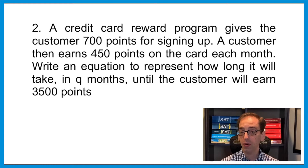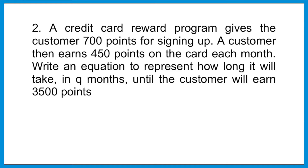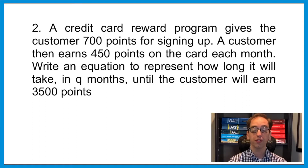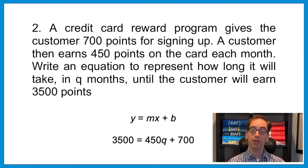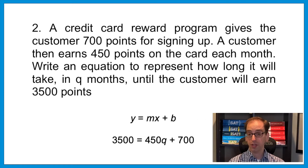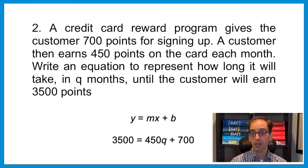Let's try another. A credit card reward program gives the customer 700 points for signing up. A customer then earns 450 points on the card each month. Write an equation to represent how long it will take in q months until the customer will earn 3500 points. The customer earns 450 points every month — that's a linear situation. The 450 is the rate of change (the slope), we're starting with 700 points (the y-intercept), and we're trying to get to 3500. So the equation reads: 3500 equals 450q plus 700.